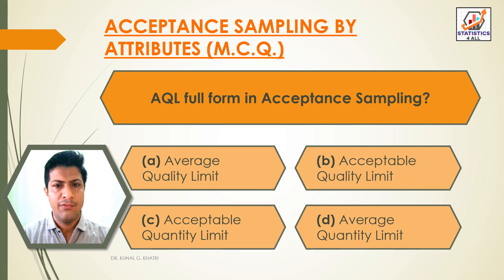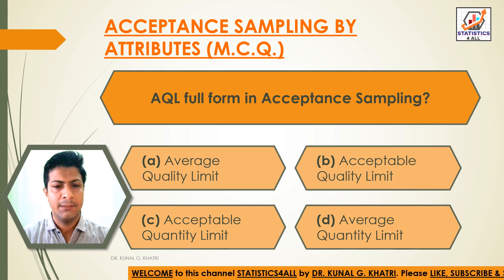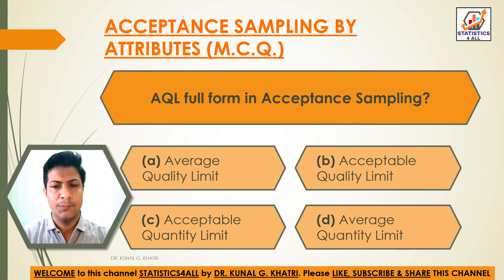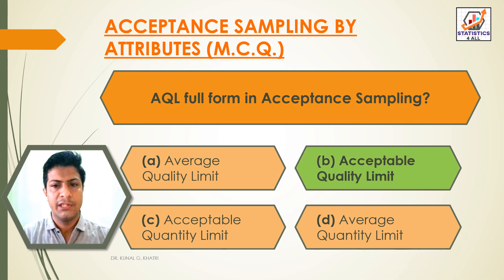Question 16: AQL — full form in acceptance sampling. Option A: Average quality limit. Option B: Acceptable quality limit. Option C: Acceptable quantity limit. Option D: Average quantity limit. The answer is Option B — Acceptable quality limit. AQL stands for Acceptable Quality Limit in acceptance sampling.